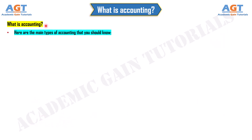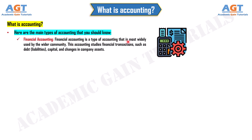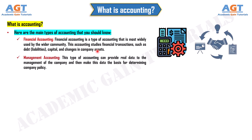Here are the main types of accounting that you should know. Financial Accounting is a type of accounting that is most widely used by the wider community. This accounting studies financial transactions, such as debt, liabilities, capital, and changes in company assets. Management Accounting provides real data to the management of the company and makes this data the basis for determining company policy.